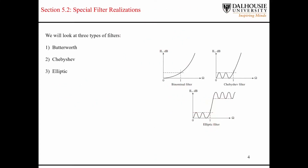There are three main types of filters in terms of the characteristics in the pass and stop bands. The three types are Butterworth, Chebyshev, and elliptic.